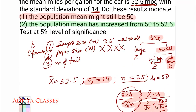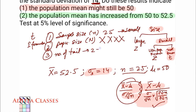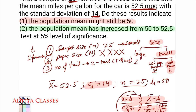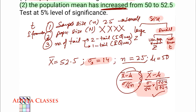Now for the number of tails. For the first question — population mean might still be 50 — the number of tails is two-tailed. For the second question — population mean has increased — since they are only talking of an increase, it is one-tailed. So we will use the T-test with the first formula, two-tailed for question one, and one-tailed for question two.